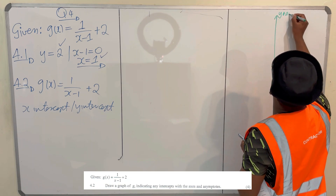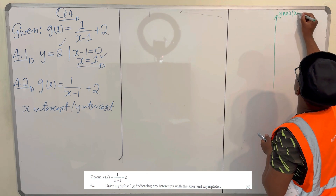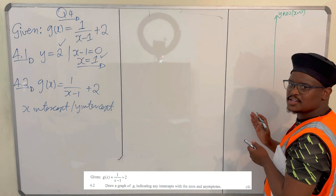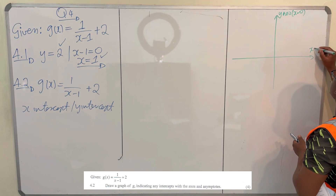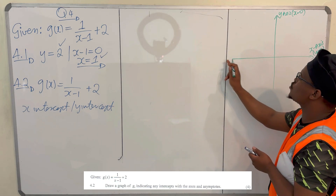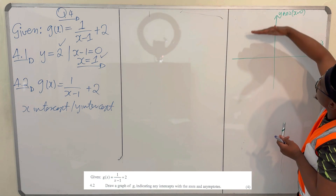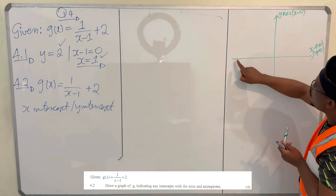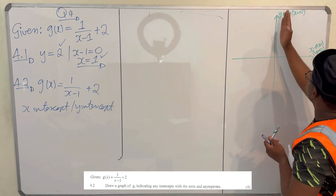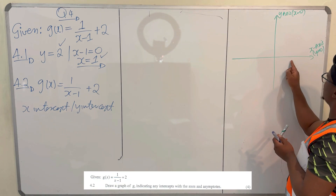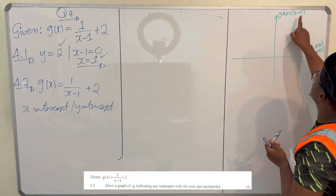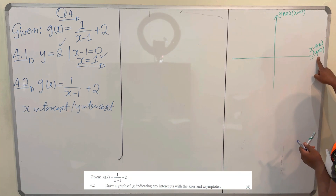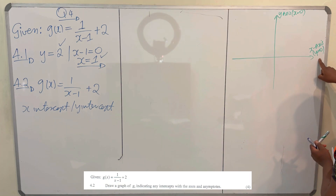These are the y-axis — the equation for the y-axis is x equals 0, because along the y-axis x is 0 the whole time. And these are the x-axis — the equation for the x-axis is y equals 0, because y is 0 throughout that line. Above the line y is positive, below it y is negative, so on the line y is 0. Similarly, along the y-axis x is 0.